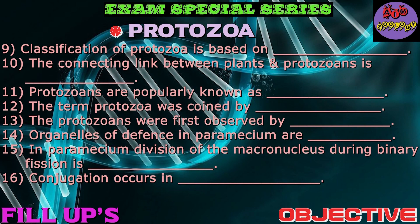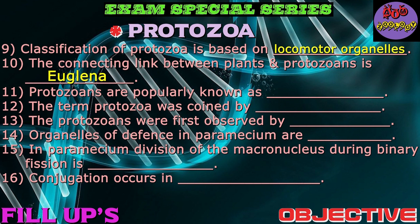Question number nine: Classification of protozoa is based on locomotor organelles. Next question: The connecting link between plants and protozoans is? Correct answer is Euglena. Question number eleven: Protozoans are popularly known as animalcules. Question number twelve: The term protozoa was coined by? Very important — the term protozoa was coined by Goldfuss.